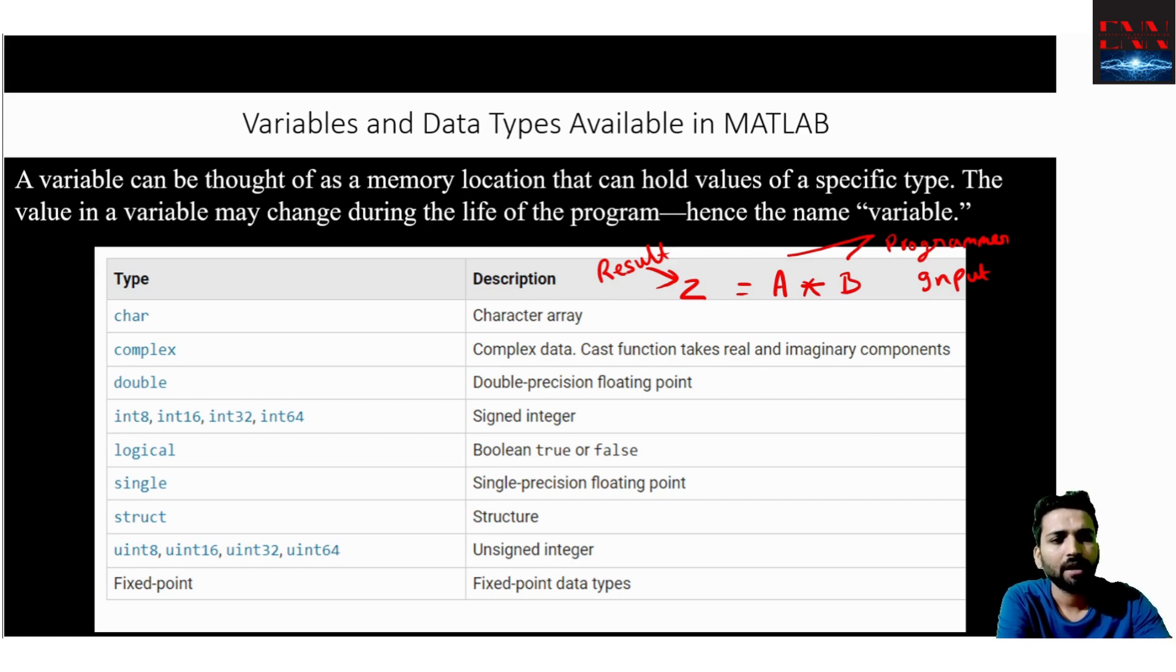But what kind of nature does Z or A or B have? A or B as a variable can have any nature. What I mean by nature is A can have a value of 0.9, A can have a value of 99, A can have a value of an irrational number like 3.1456. Or in electrical engineering, we have complex numbers, J4. Depending on the type and the nature of the variable, we assign the data type to that particular variable.